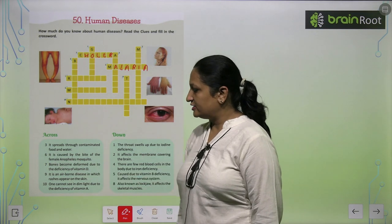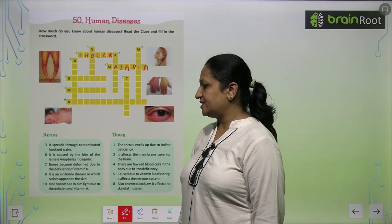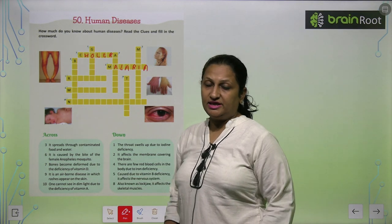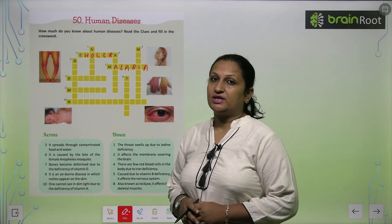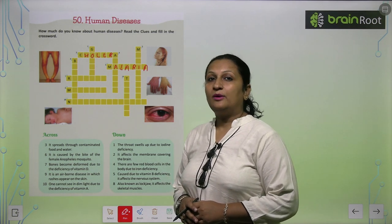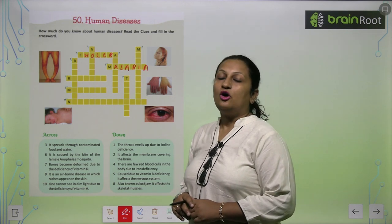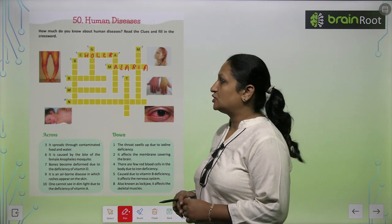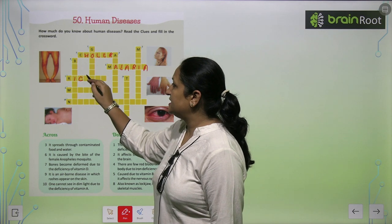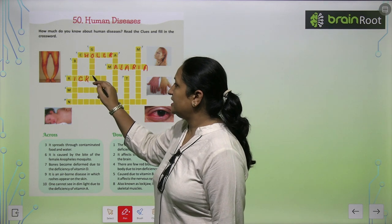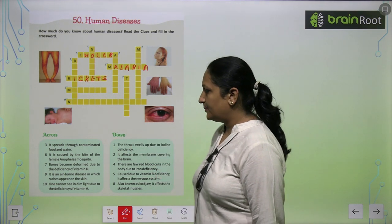Children, see the seventh one: Bones become deformed due to deficiency of Vitamin D. When there is a deficiency of Vitamin D in the body, our bones become very weak. And this disease is called Rickets — R-I-C-K-E-T-S, Rickets.